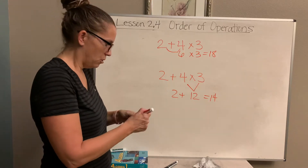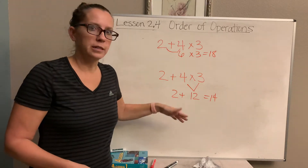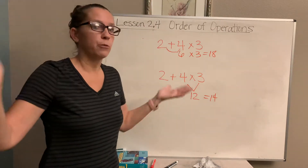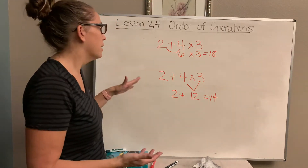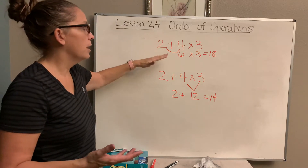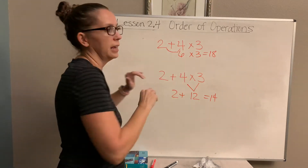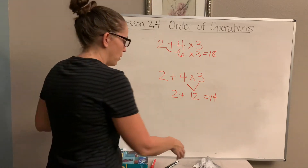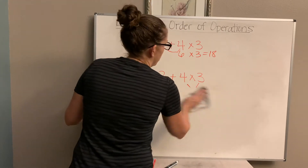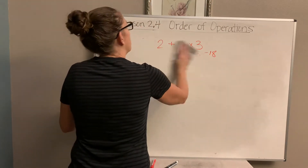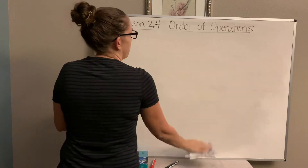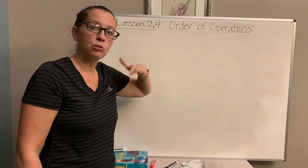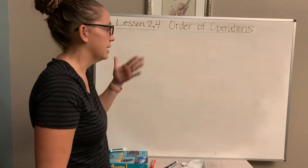In math, you don't want to get a different answer than somebody else. If you're calculating something like the rotation of the earth or the speed of the earth, you don't want one scientist to get one number and another scientist to get a different number. So we have come up with — and by 'we' I mean those people a long, long time ago — a system for math, and the basis is the order of operations. This tells you what you're supposed to do first, second, and third.